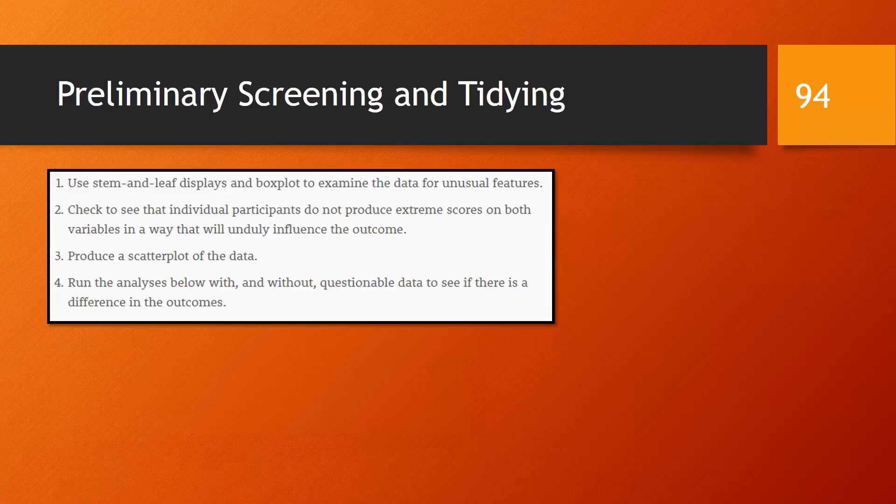Were any of the participants responding in unreasonable ways that would make us question the legitimacy of their responses? Were there any participants who had outlying data points on both variables? This might have a disproportionate influence on the resulting correlations. We should make a scatterplot of the data, looking for undue influence of particular extreme data points. Then we can finally run our analyses, including and excluding extreme points to see what differences appear in the results.